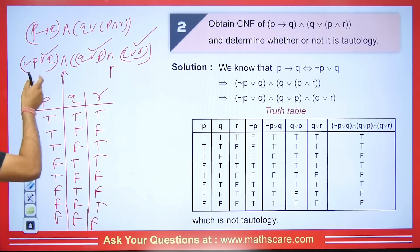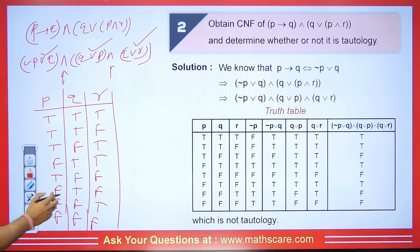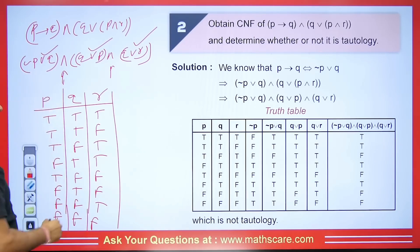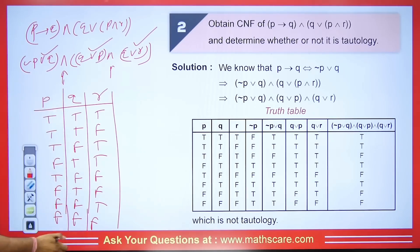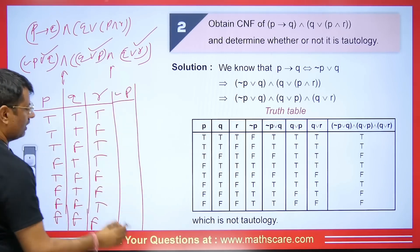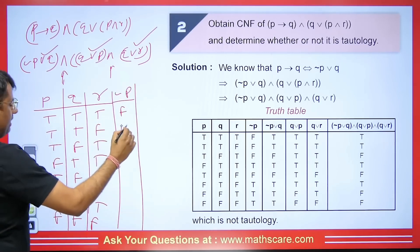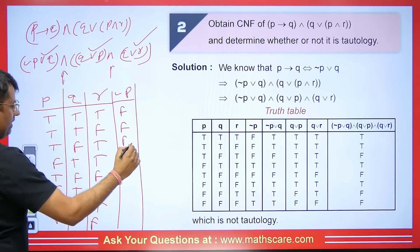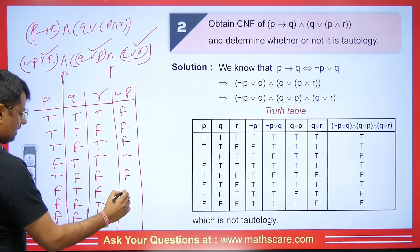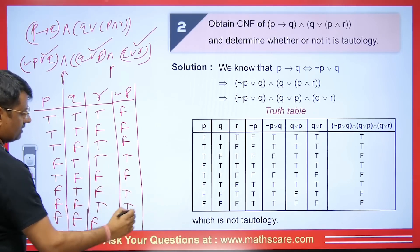Now calculate the values. First, let's talk about negation of P. P is given and its negation will be just opposite: F, F, F, F, T, T, T, T.